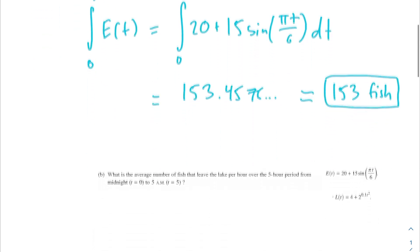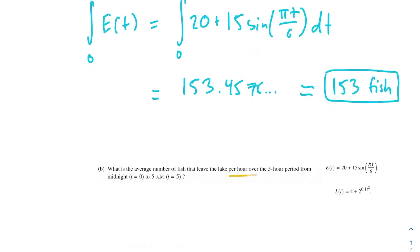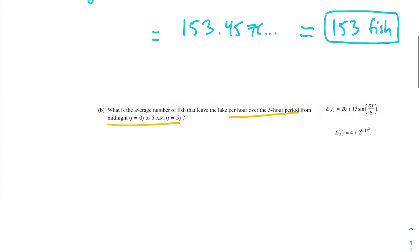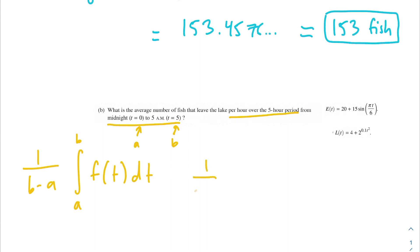Moving on to the next problem: what is the average number of fish that leave the lake per hour over the five-hour period from midnight to 5 a.m.? It sounds like we're going to want to use the average value formula, which is (1/(b−a)) times the integral from a to b of f(t) dt. In this problem, we set b = 5 and a = 0. So that looks like (1/(5−0)) times the integral from 0 to 5 of l(t) — which is (4 + 2^(0.1t²)) dt — since the problem asks about fish that leave the lake.